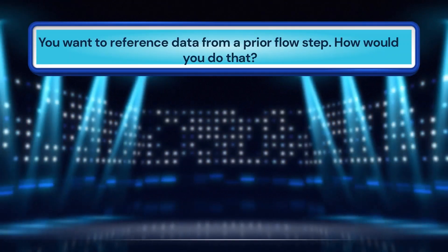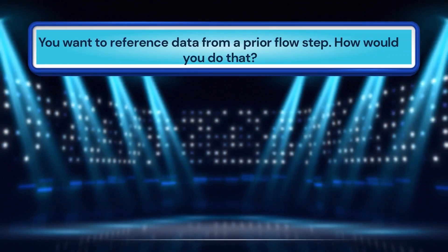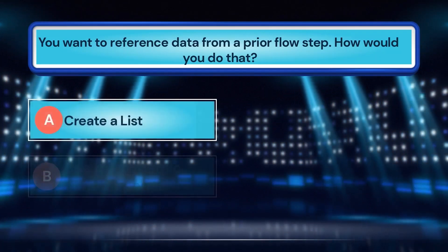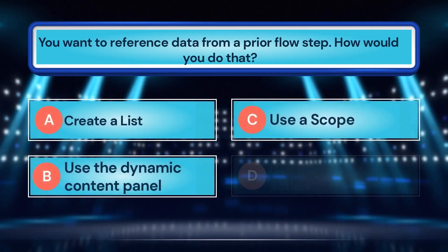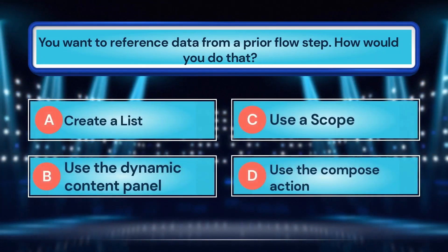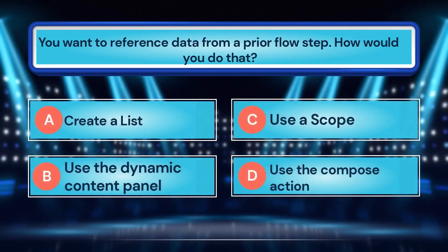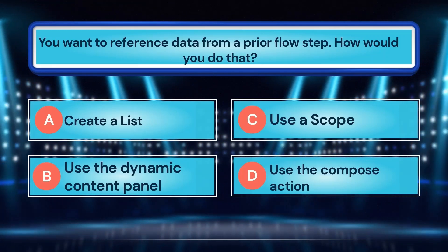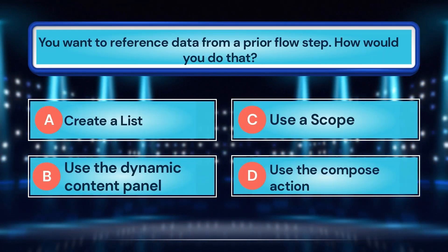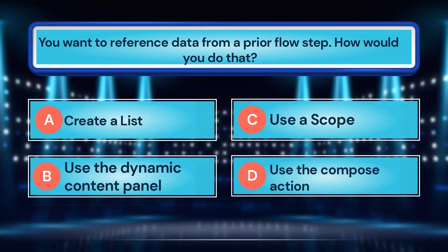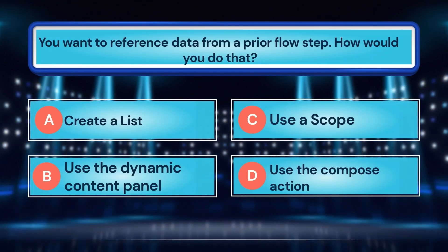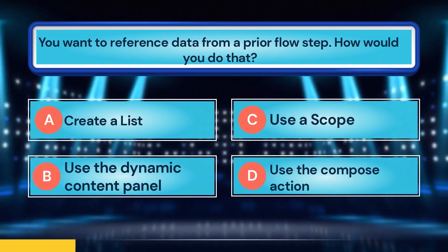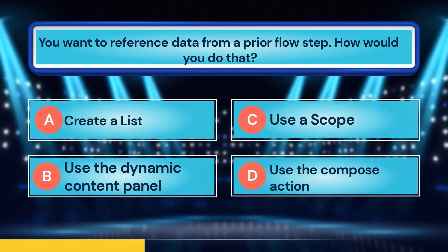You want to reference data from a prior flow step. How would you do that? A. Create a list. B. Use the dynamic content panel. C. Use a scope. D. Use the compose action.